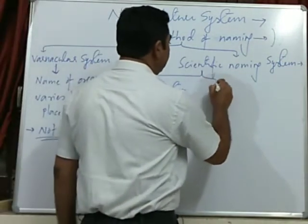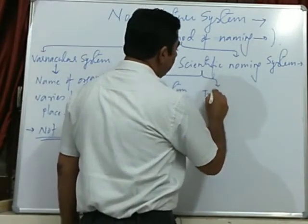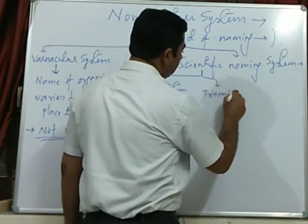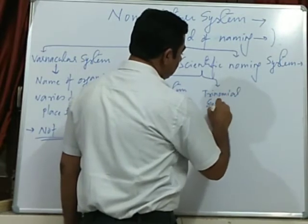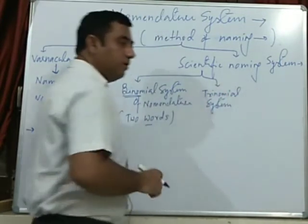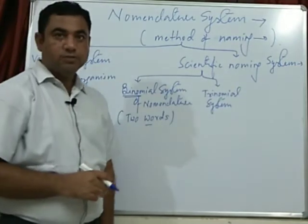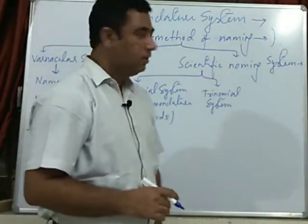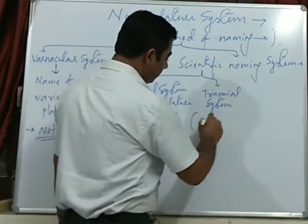Second is trinomial system of nomenclature, which consists of three words.